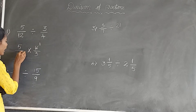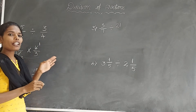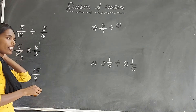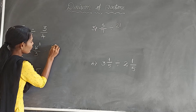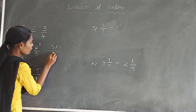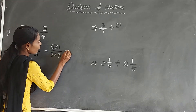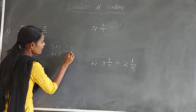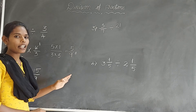4 and 4 cancel with 12. Now we have to multiply the numerators and denominators: 5 into 1 by 3 into 3. 5 ones are 5, and 3 threes are 9. So the answer is 5 by 9.